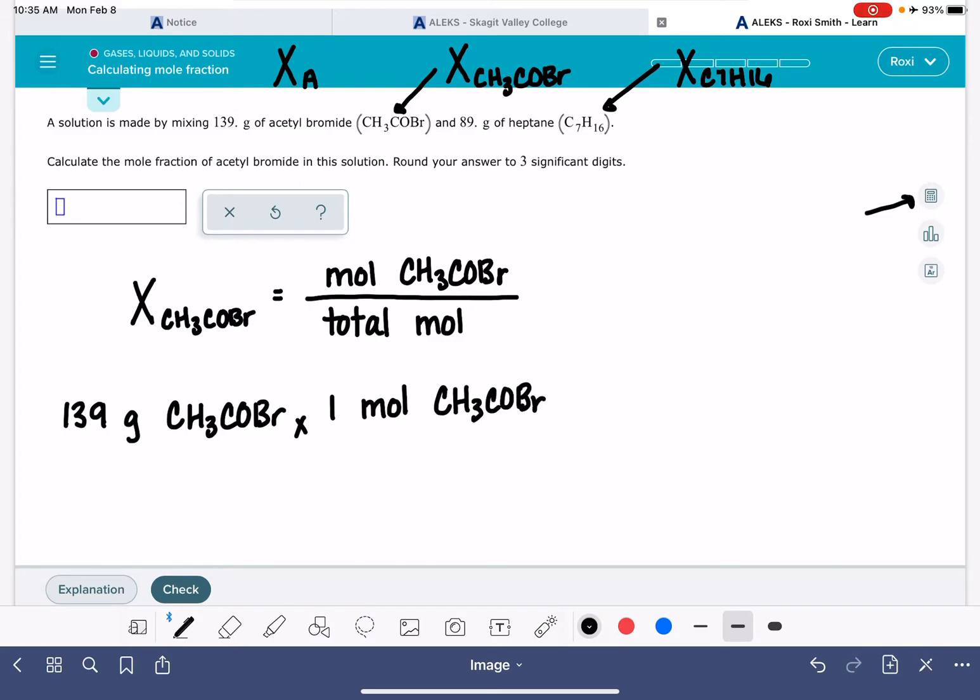So just for the sake of being speedy, I am going to approximate the molecular weights. This is about 123 grams per mole.